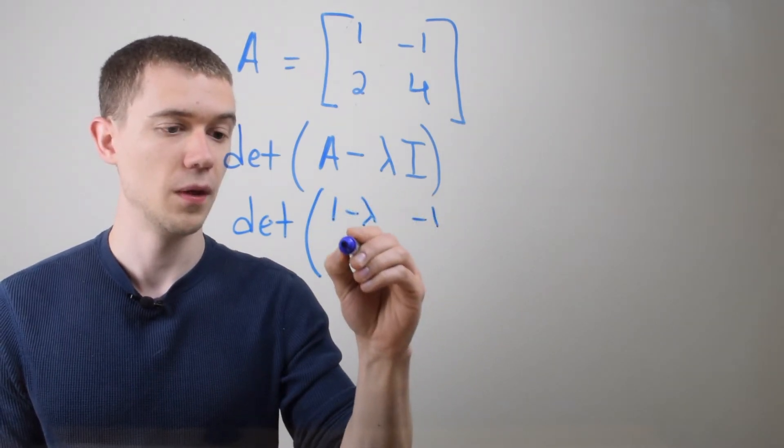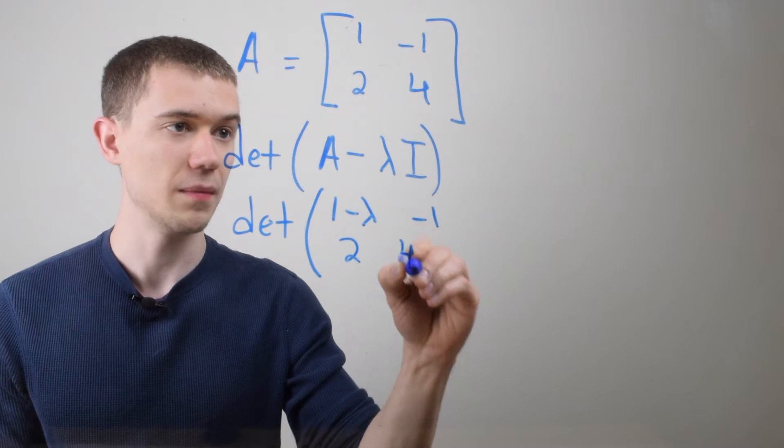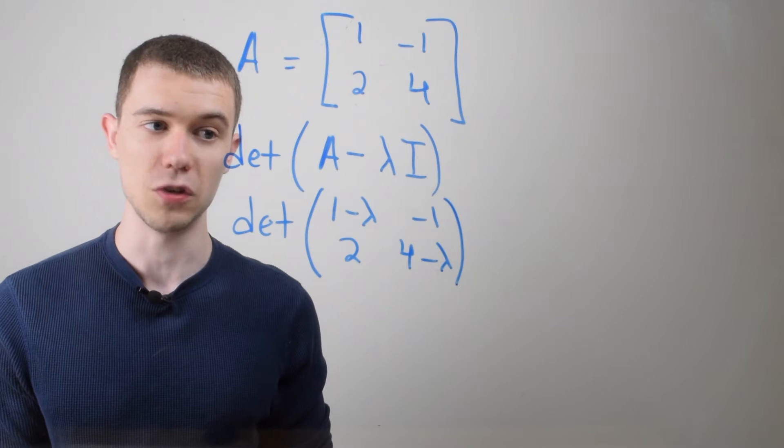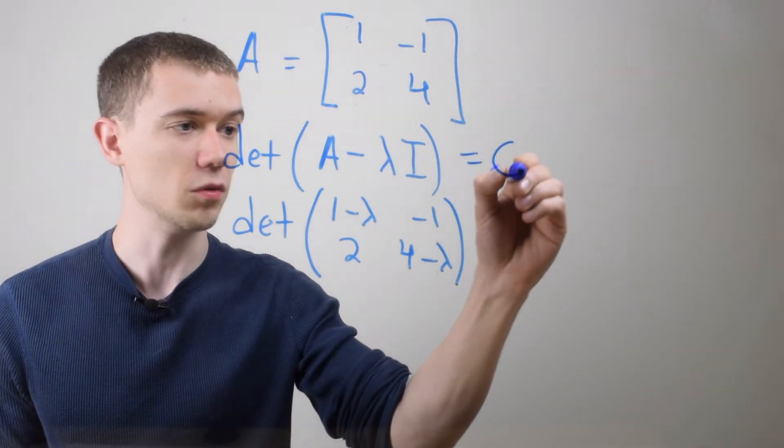So if you just remember to subtract lambda off of the main diagonal and then take the determinant of this matrix and then what we're going to do is we're going to set it equal to zero.